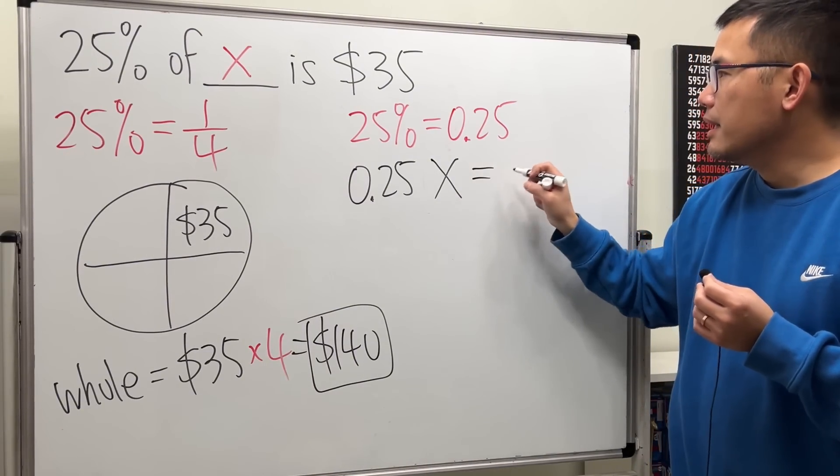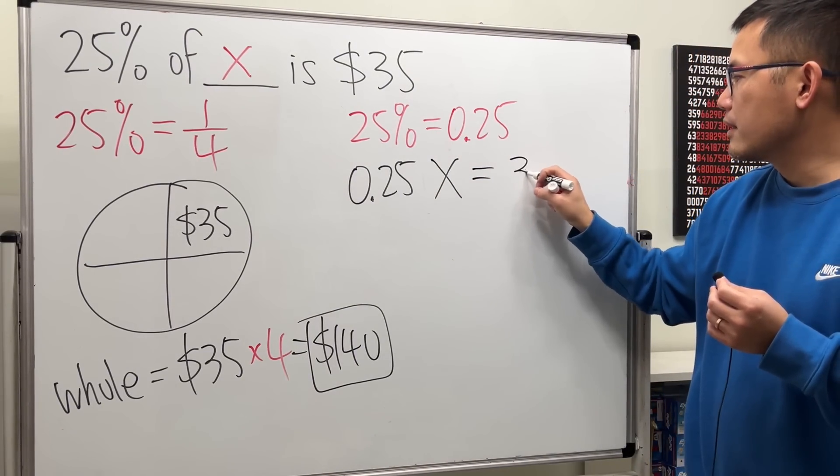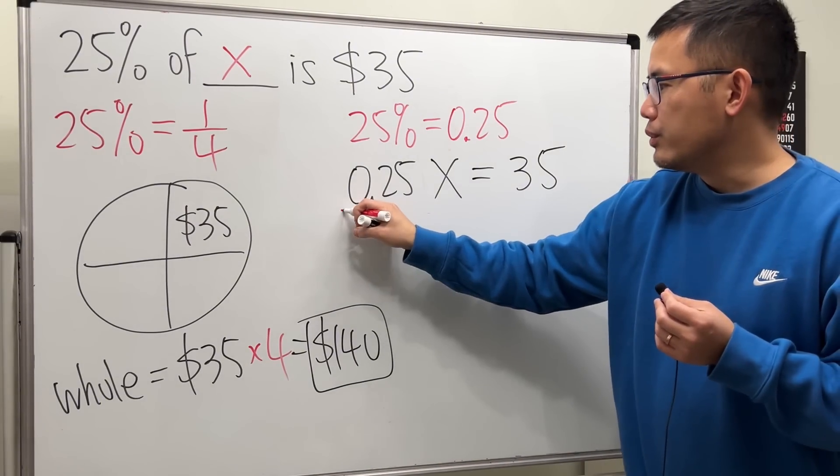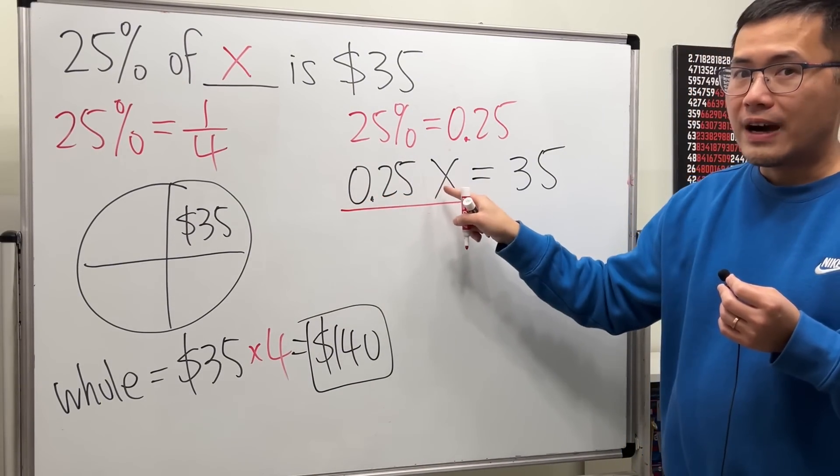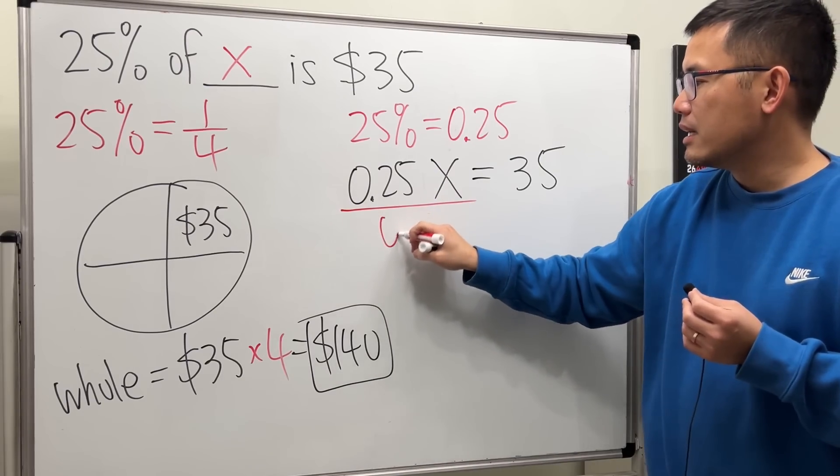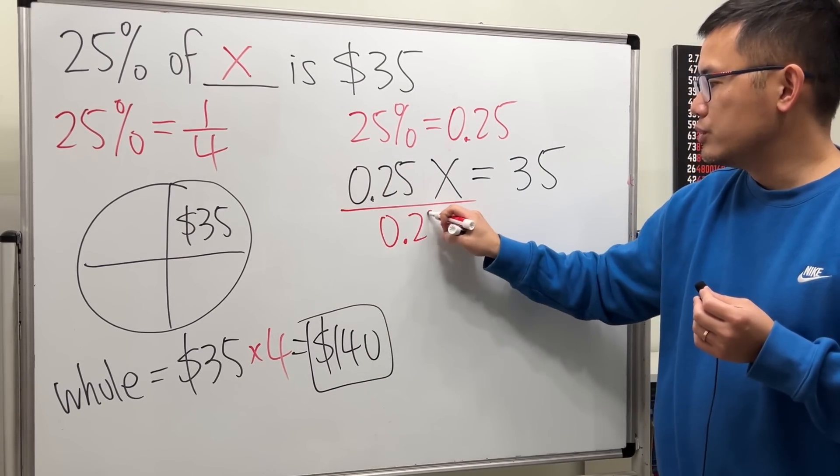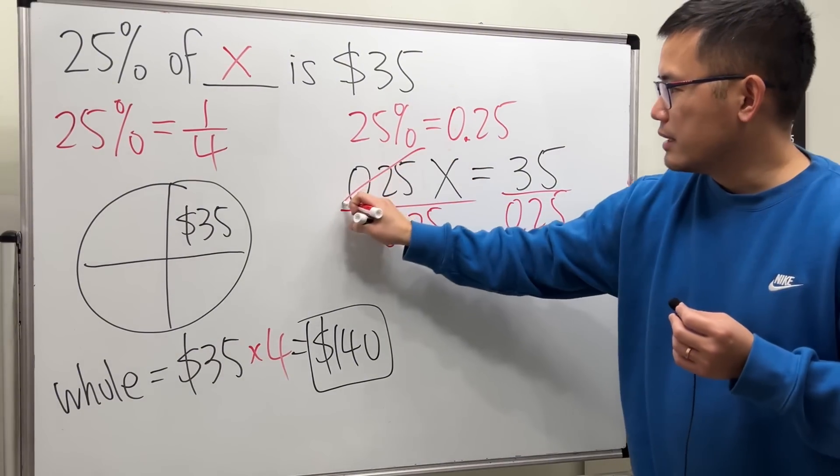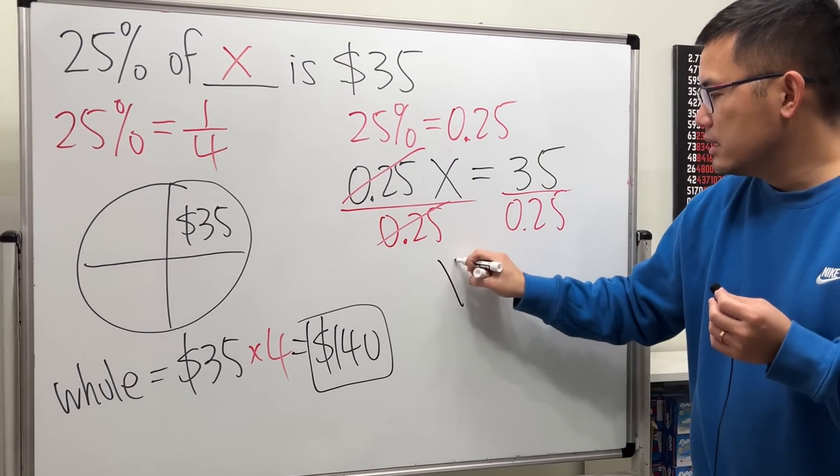That equals 35, and now you can just work this out. We are going to divide because this was multiplying, now we have to divide both sides by 0.25. So cancel, cancel, and then x is just equal to...